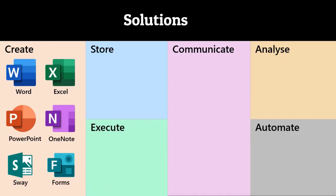Each of these needs has a set of products. Most of these products you already know, but I'm telling you a different way of positioning this. For creation: Word, Excel, PowerPoint, OneNote you already know. Sway is a very simple but effective tool for end users — it allows you to provide the content and creates responsive web pages without programming, automatically hosted with a URL to share. Forms is like Google Forms or Survey Monkey.